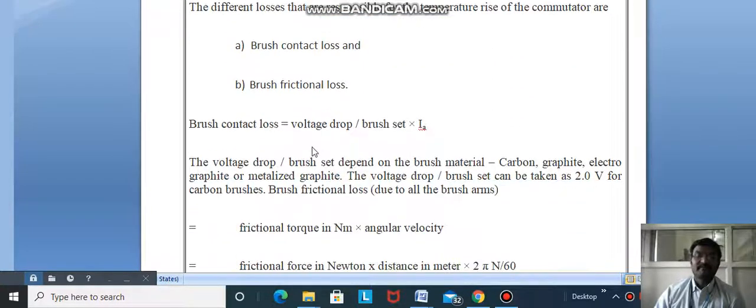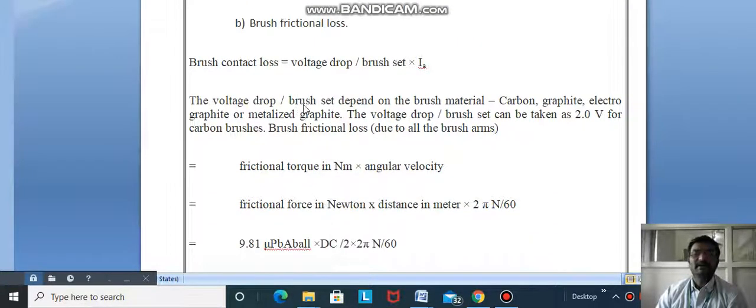Different losses are responsible for temperature rise: brush contact loss and brush frictional loss. When the motor rotates, frictional losses occur. Brush contact loss equals voltage drop per brush set multiplied by armature current Ia. The voltage drop per brush set depends on brush material: carbon, graphite, electro-graphite, or metalized graphite.